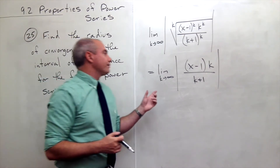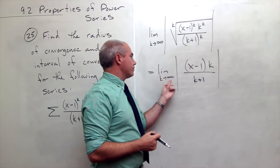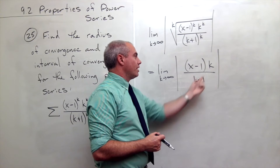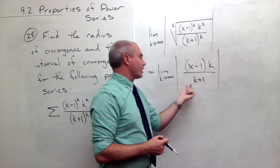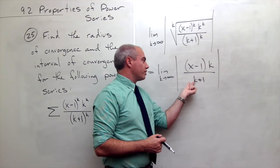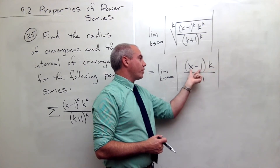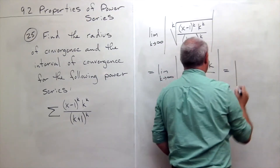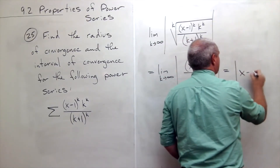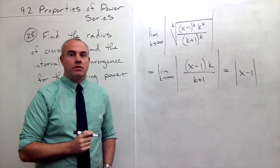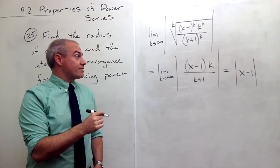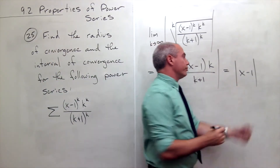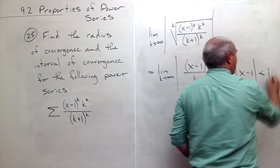Now I'm taking the limit as k goes to infinity of this. I've got a k on top and a k on bottom, so this is just going to be the coefficients out in front of the k. On the bottom the coefficient is 1, on the top the coefficient is x minus 1. So this limit is just the absolute value of x minus 1. The root test tells me that my series converges if what I get out of the root test is less than 1.